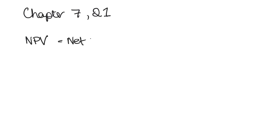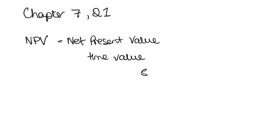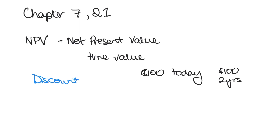NPV stands for net present value and it's about taking into account the time value of money. That means that $100 today and $100 in two years' time actually have different levels of value. So we need to think about the time value of money, and when we're calculating the net present value, the one thing we need to do is choose a discount rate — meaning how much do we discount future money to put it back into today's terms.